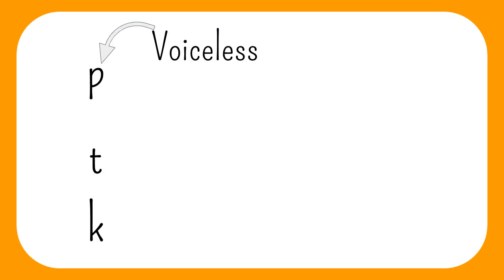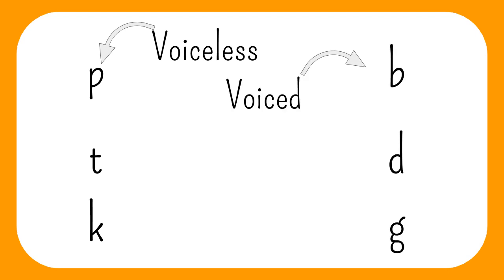P, T and K are known as the voiceless plosives, while B, D and G are voiced. If a sound is called voiceless, it means that the vocal cords don't produce voicing, and a voiced plosive means that the vocal cords do produce voicing. A good way to test this is by placing your fingers on the front of your neck over your larynx and alternating between voiced and voiceless sounds. You should be able to feel your throat vibrating for voiced sounds and not vibrating for voiceless sounds.